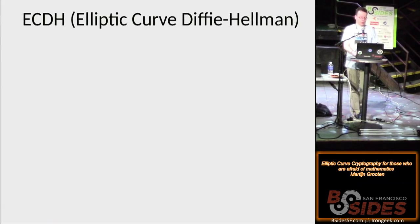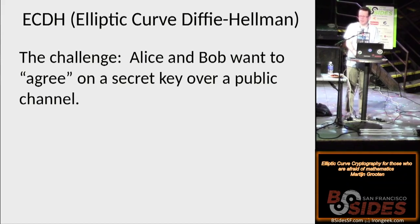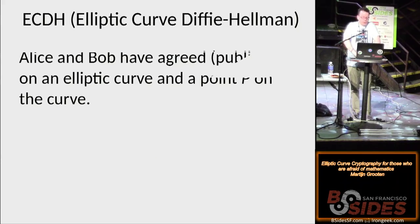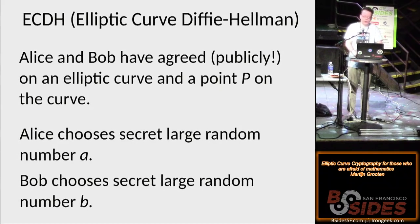Probably the most common implementation is elliptic curve Diffie-Hellman, and it's a situation where Alice and Bob want to agree on a secret key over a public channel. For example, Alice is a web browser, Bob is a web server, and they need to get a key so that they can encrypt a TLS session. So what happens is that Alice and Bob first agree publicly over a certain elliptic curve to use and a point P on that curve.